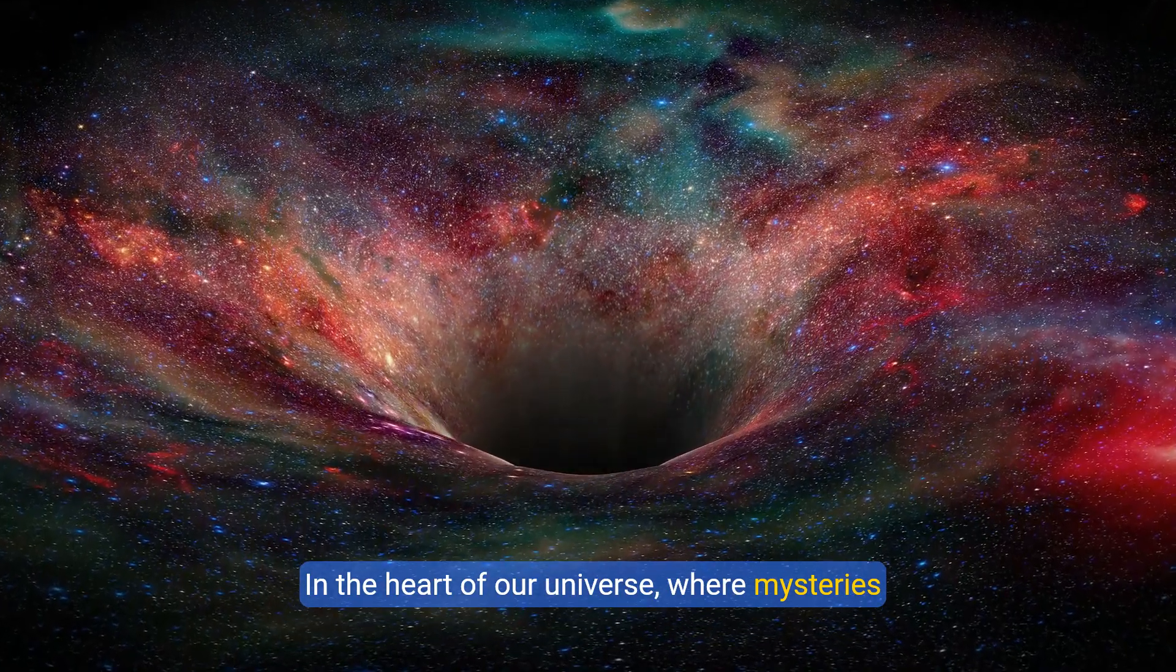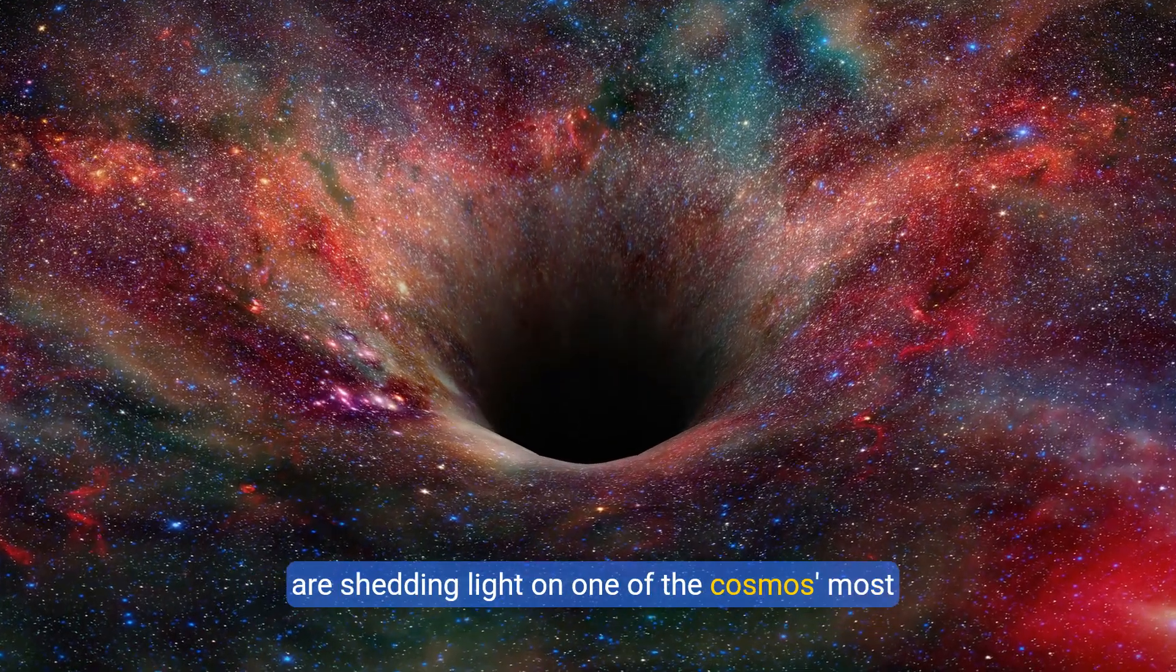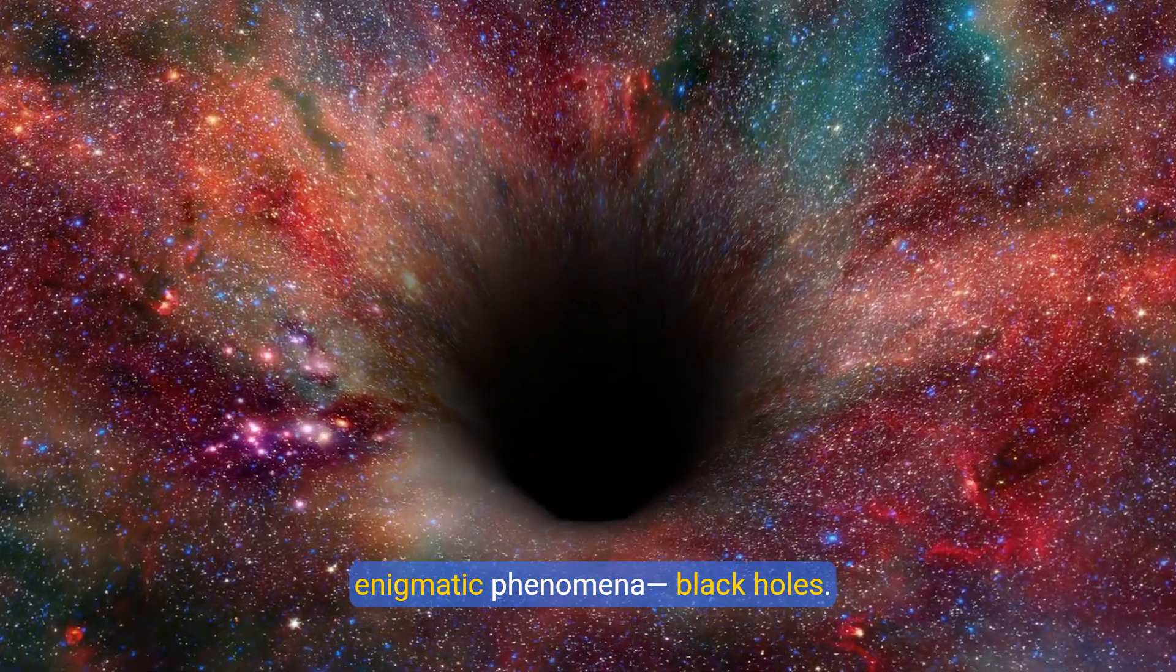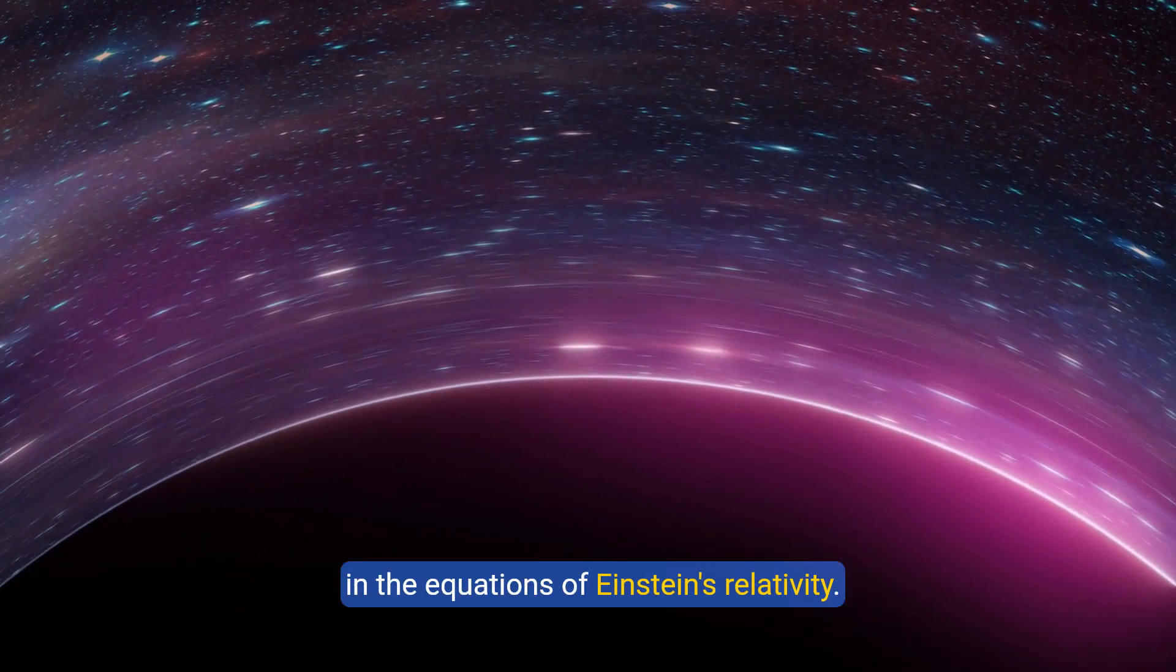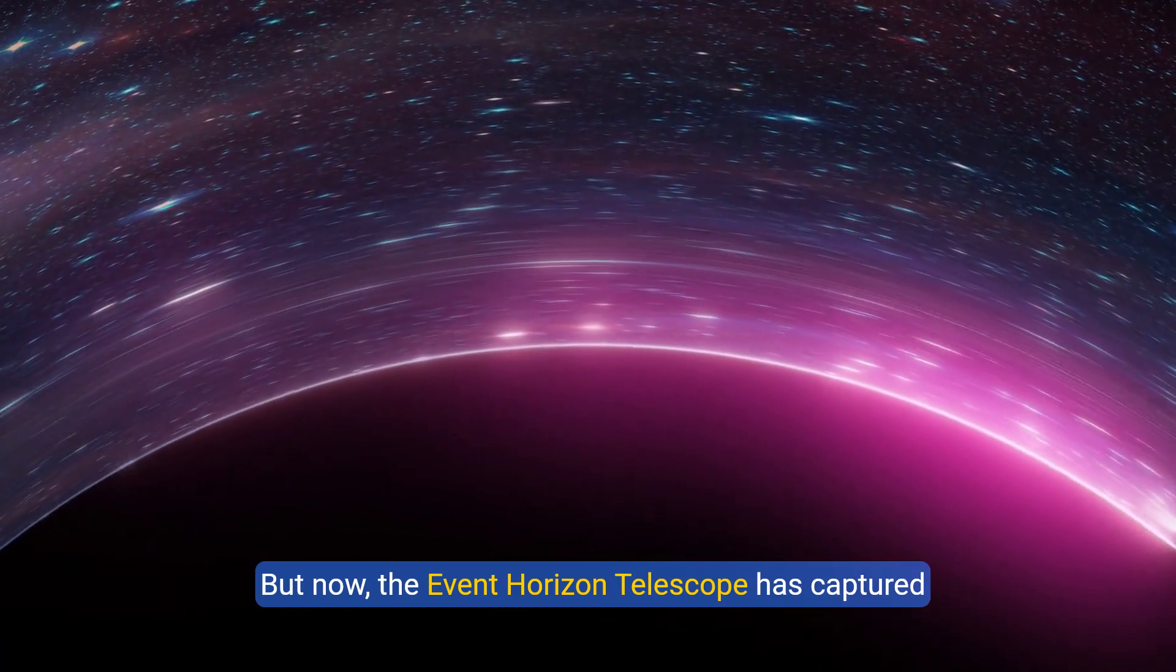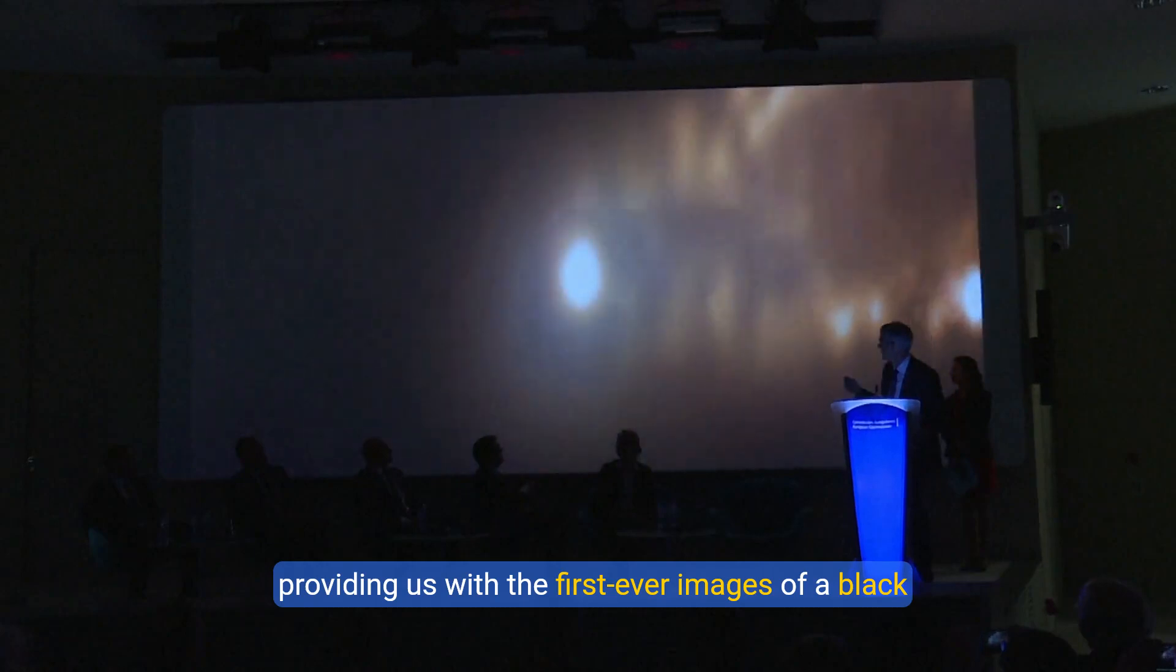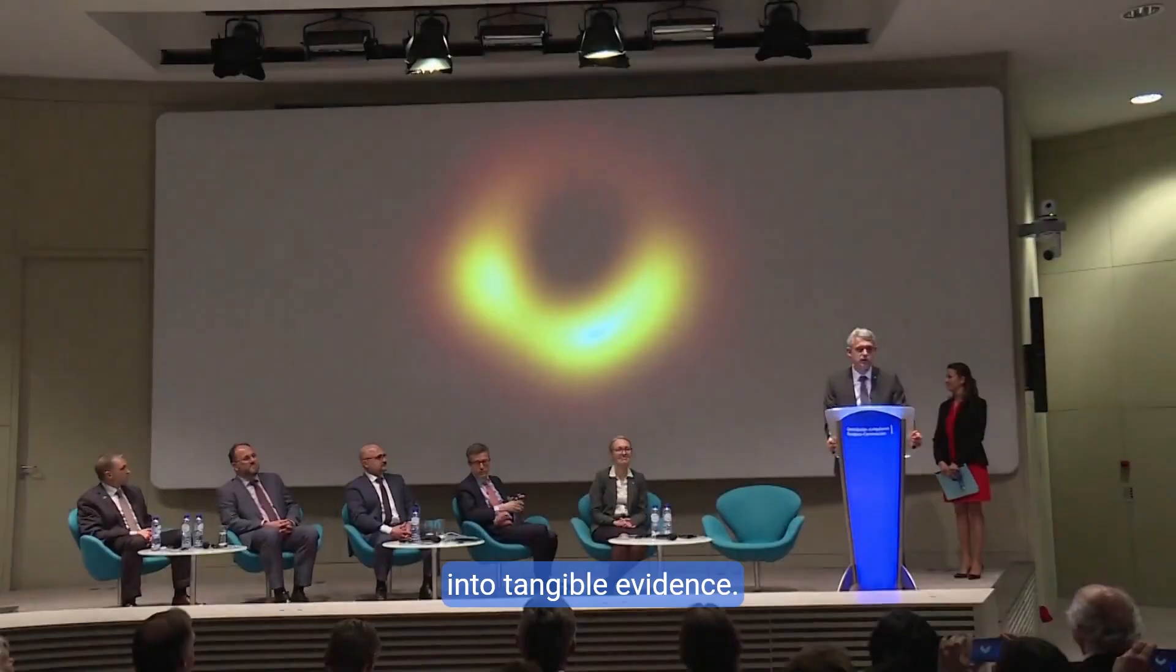In the heart of our universe, where mysteries intertwine with reality, groundbreaking discoveries are shedding light on one of the cosmos's most enigmatic phenomena: black holes. For decades, they were theoretical shadows lurking in the equations of Einstein's relativity. But now, the Event Horizon Telescope has captured their essence, providing us with the first-ever images of a black hole's shadow—a historic moment that turned theory into tangible evidence.